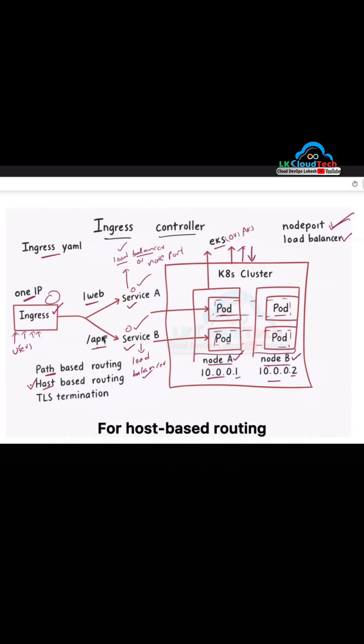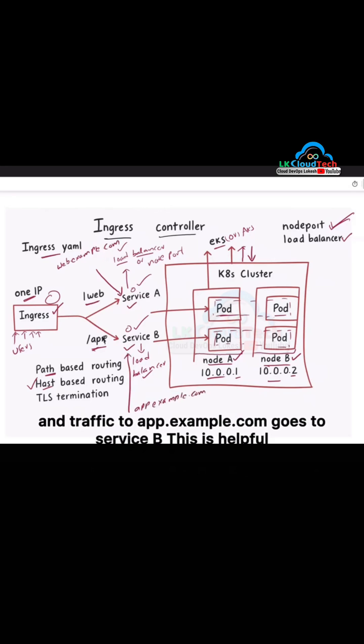It also supports host-based routing. For host-based routing, instead of using different paths, we use different domains. For example, traffic coming to web.example.com goes to service A and traffic to app.example.com goes to service B. This is helpful when you want clean URLs for each app.